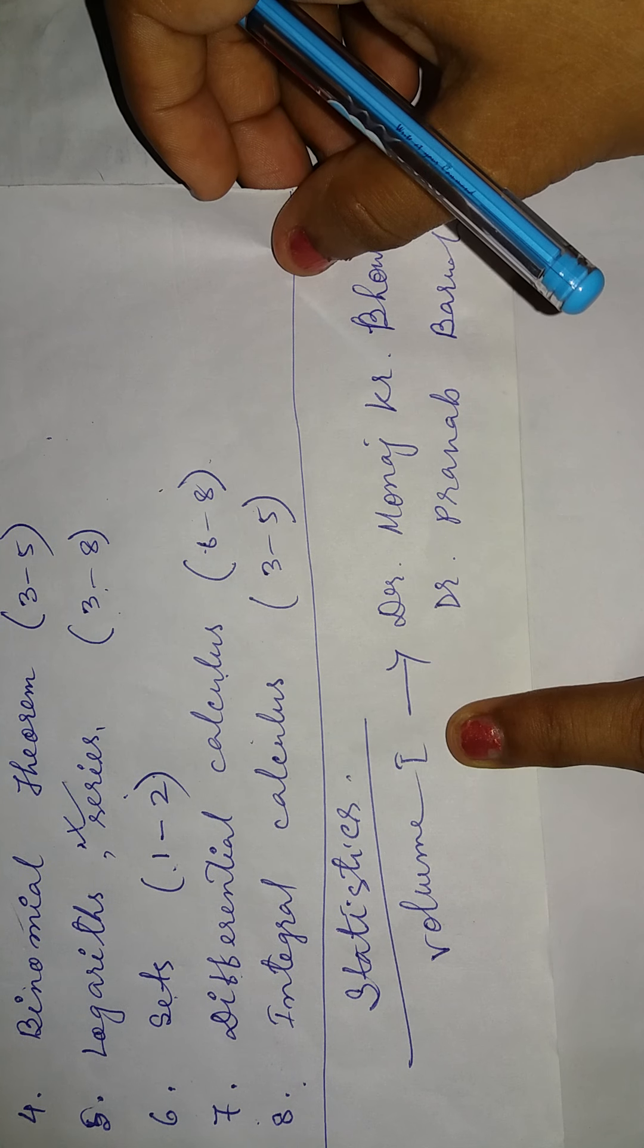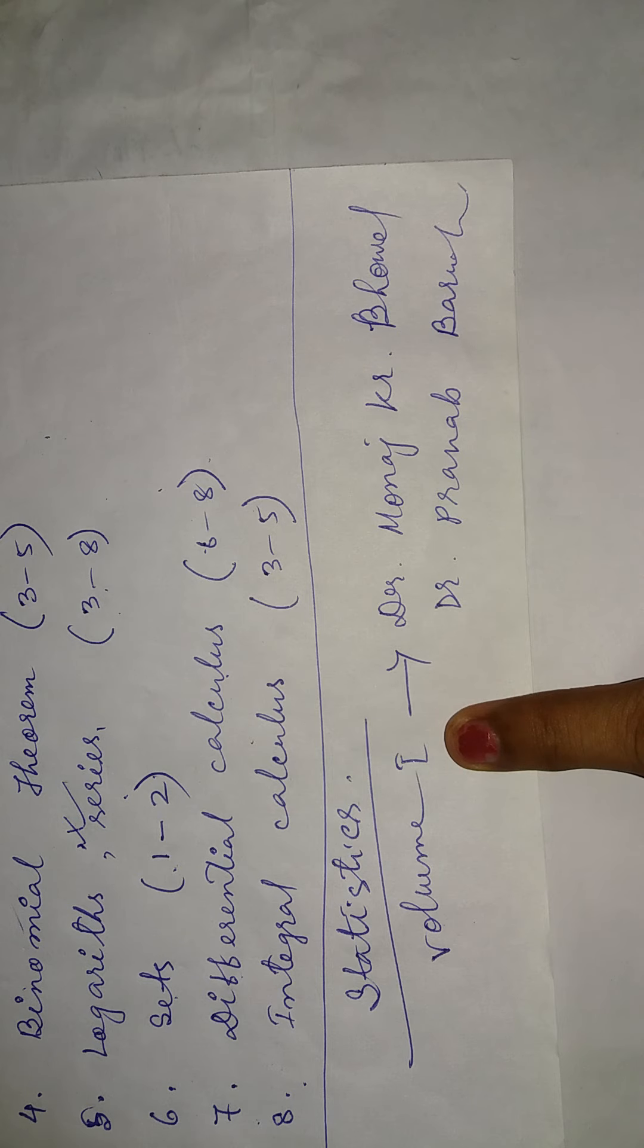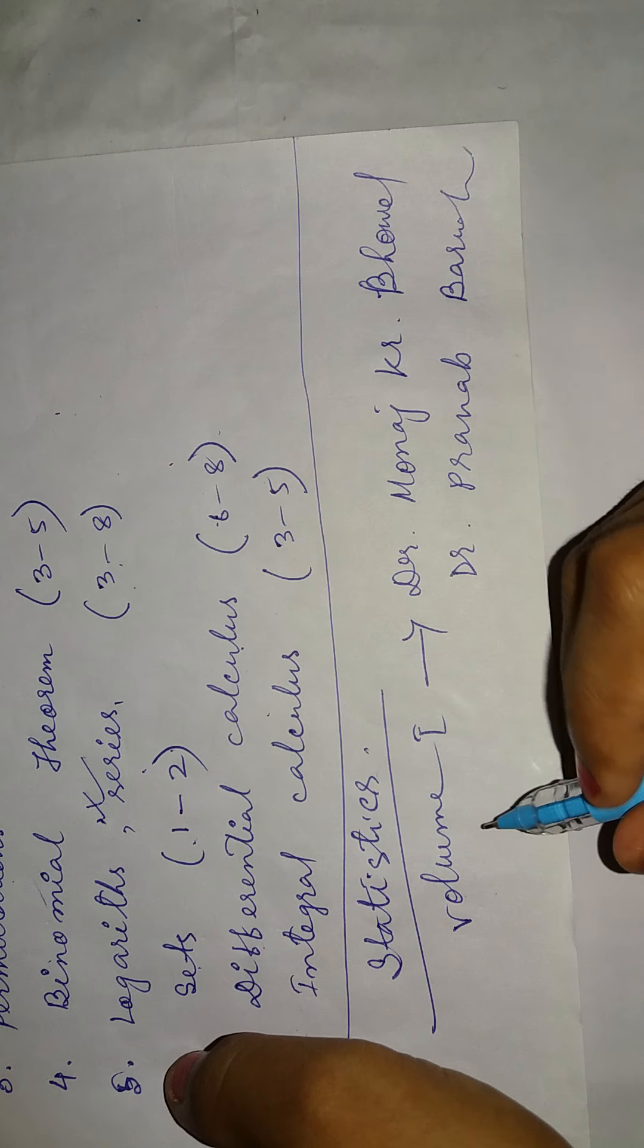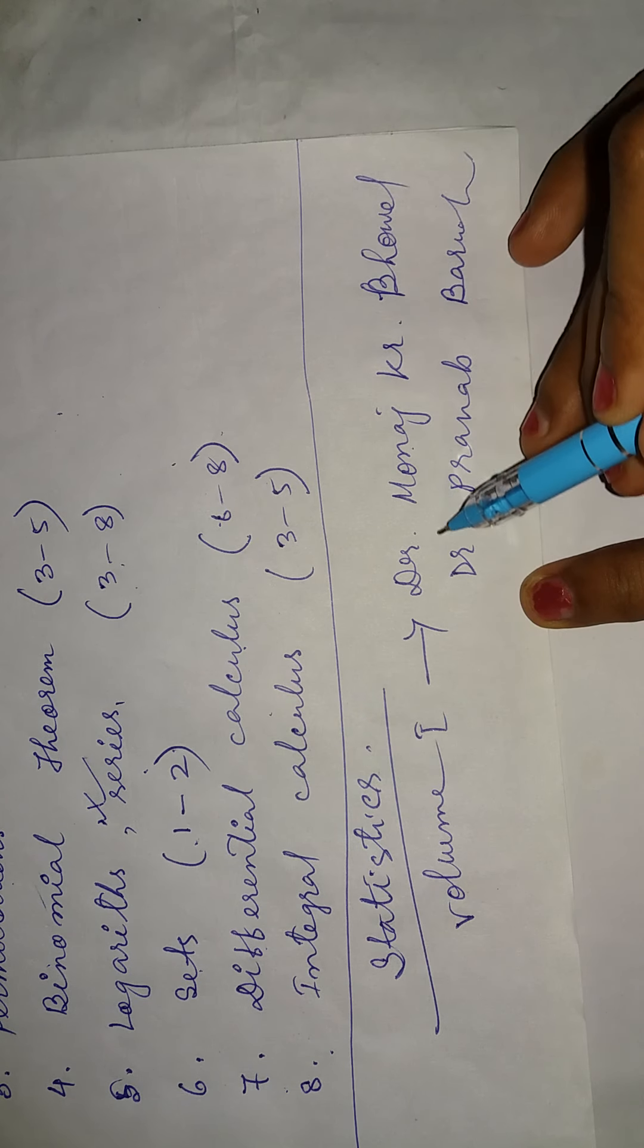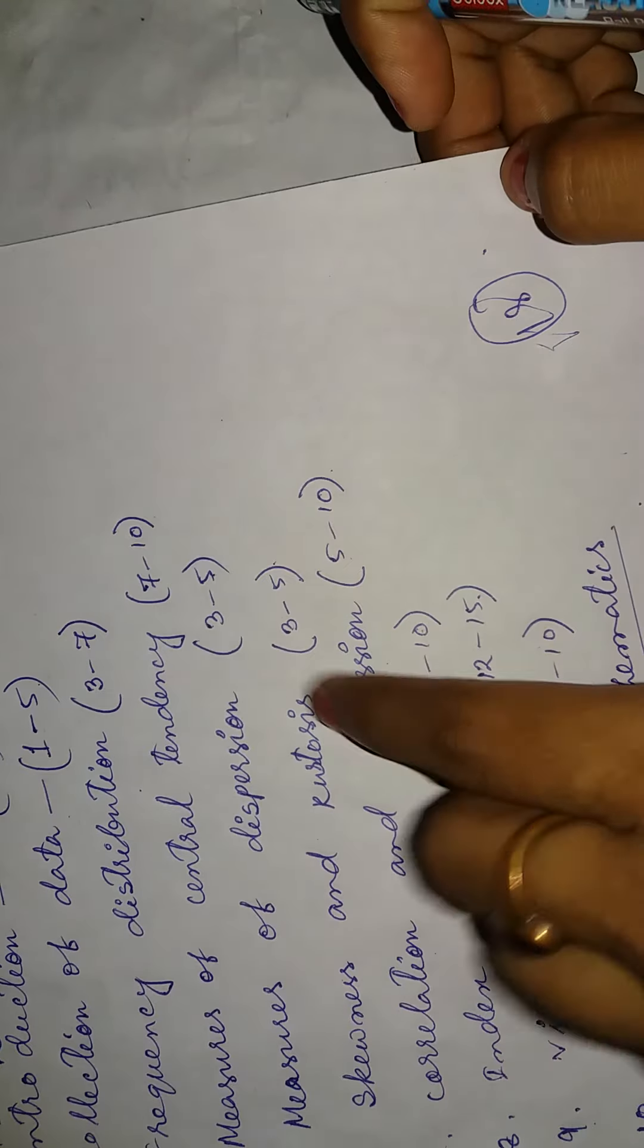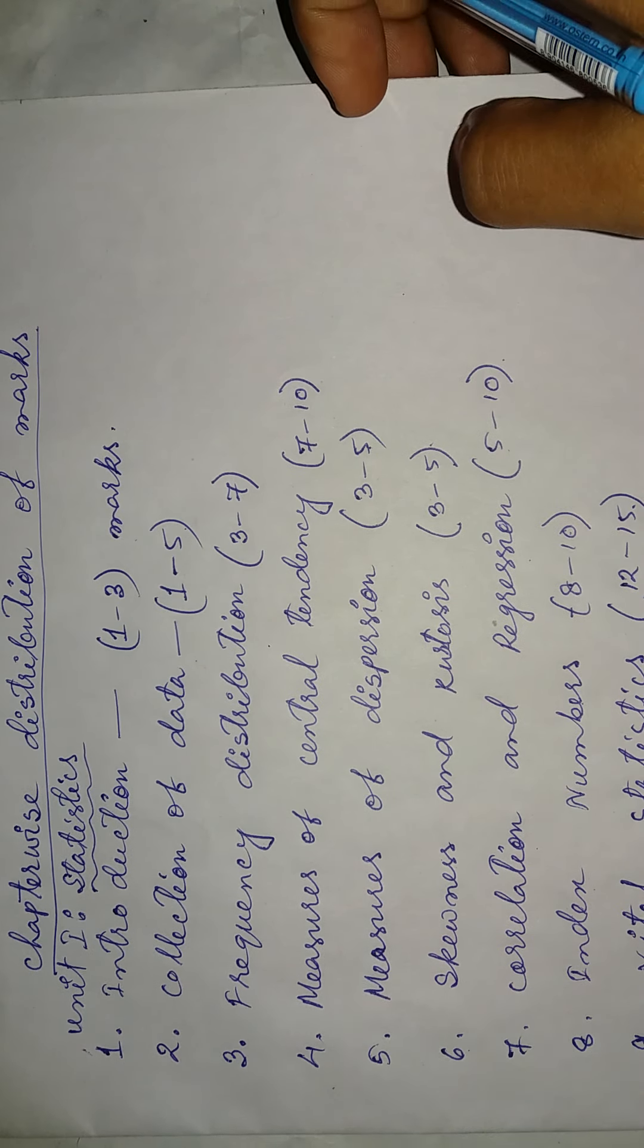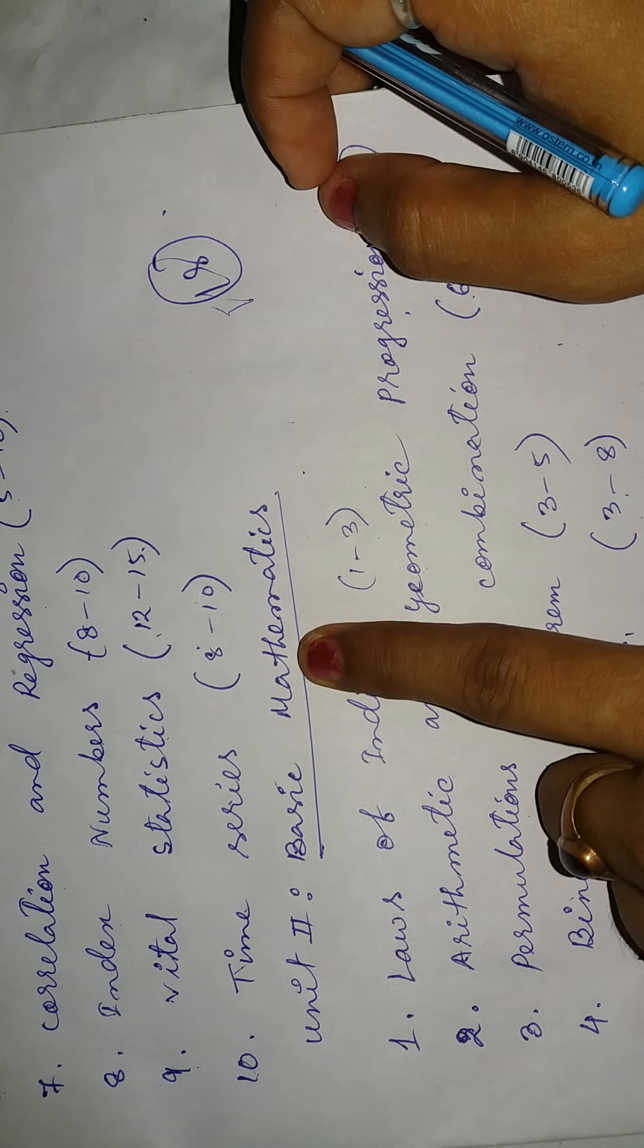For the Assamese medium students, you need to follow the English medium book. The writers are Dr. Manoj Kumar Bhaval and Dr. Pranav Bhurva. The first unit is statistics and the second one is basic mathematics. First unit 1 has 10 lessons and second unit 2 has 8 lessons.